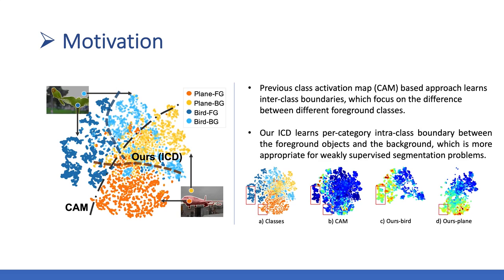Previous approaches adopt the class activation map to estimate the object pseudo-masks from image labels, but it suffers from incomplete masks.